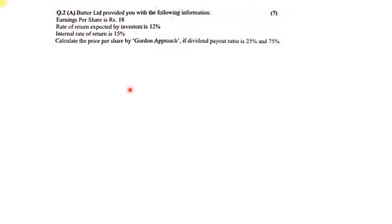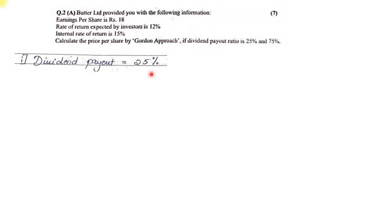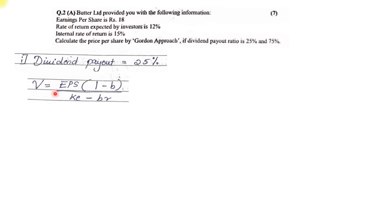Let us start with the dividend payout of 25 percent. The formula for Gordon's approach is: V (price of the share) = EPS × (1 − B) ÷ (Ke − B × R), where B is the retention ratio, R is the rate of return, Ke is the cost of capital, and EPS is earning per share. We have all values except the retention ratio B, so we find that first.